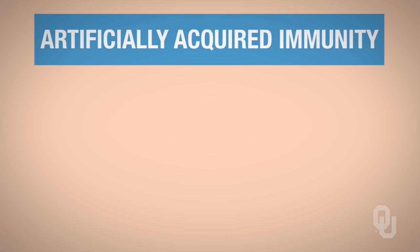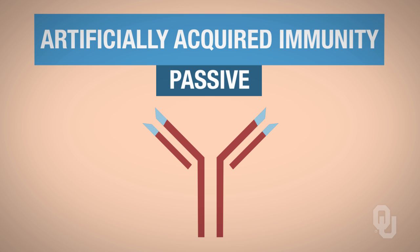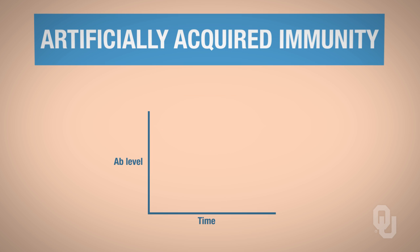Now we move on to artificially acquired immunity. The same thing holds true — we have passive and active types. In passive artificially acquired immunity, a serum containing the antibody is injected into you. You've never been exposed to the antigen, but you've been injected with the antibody. Your antibody level would start off high because you've been injected with it, and then over time it would decrease. Because you haven't been exposed to the antigen, you would never make plasma cells, your own antibodies, or any memory cells.